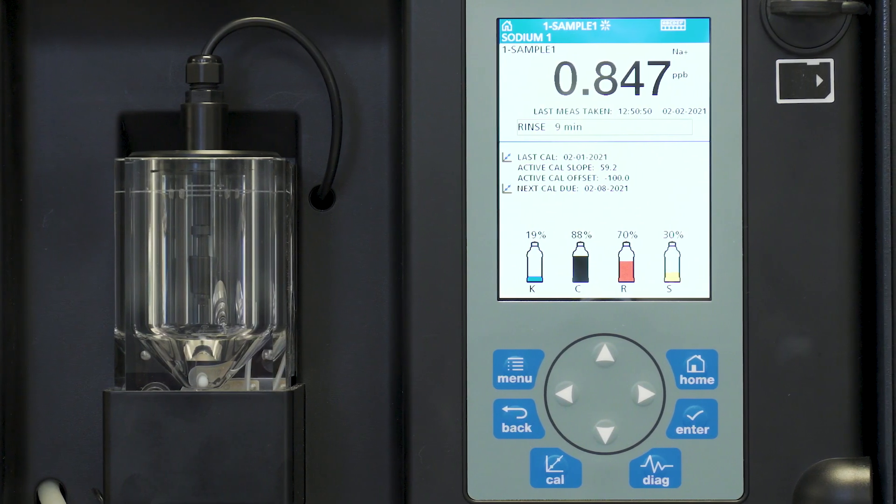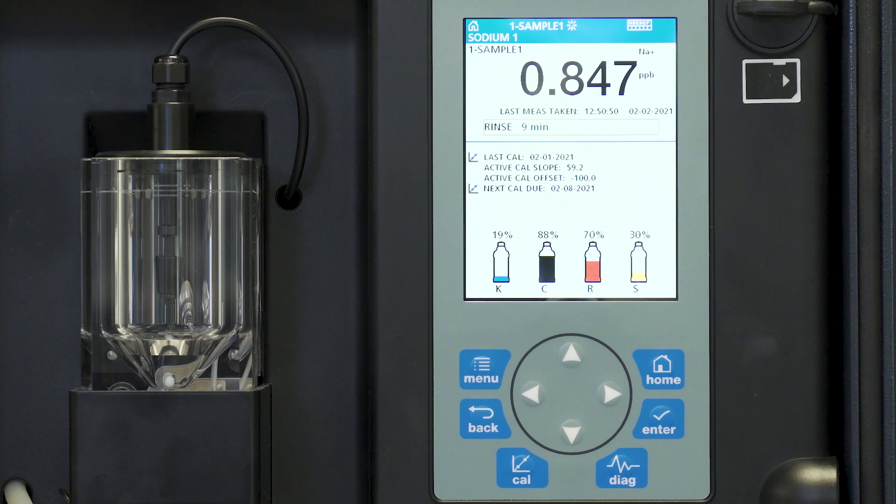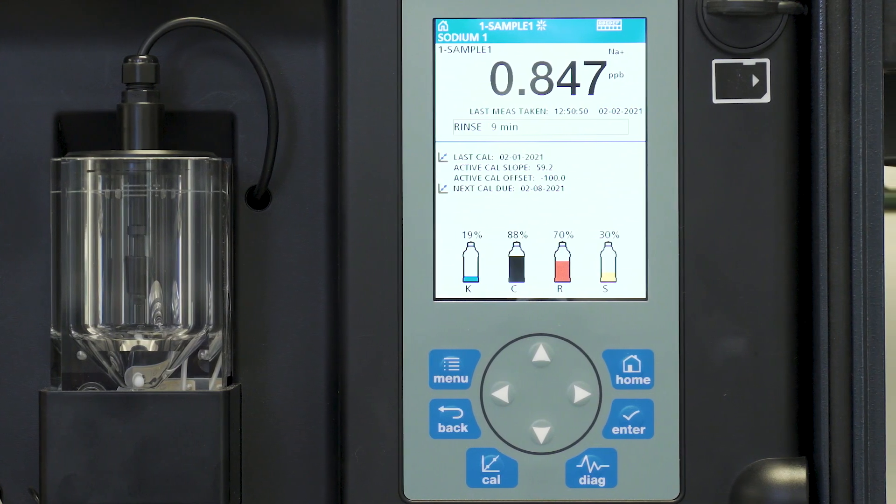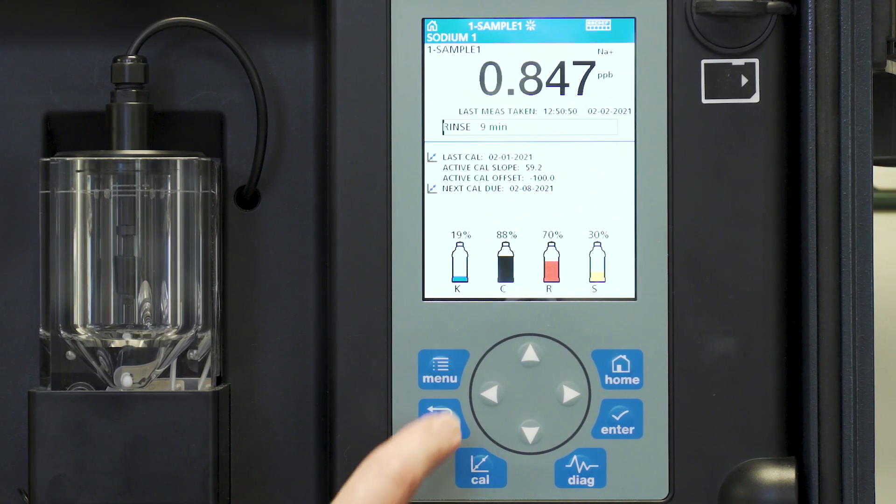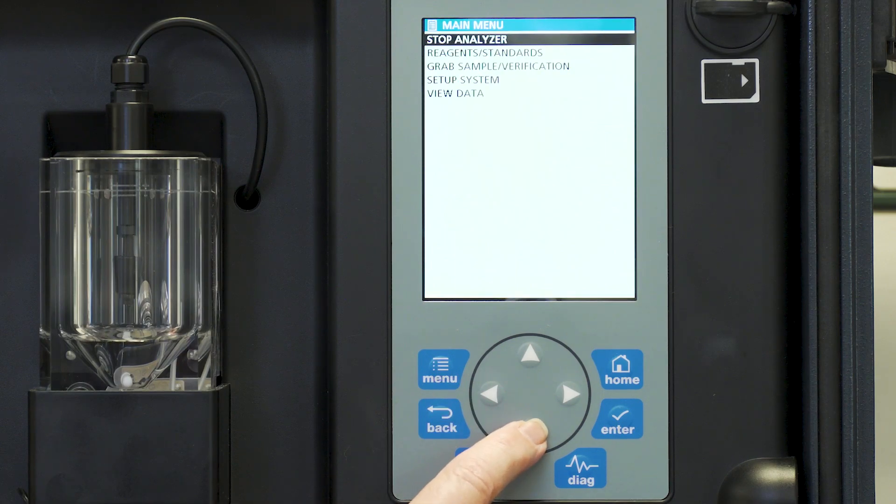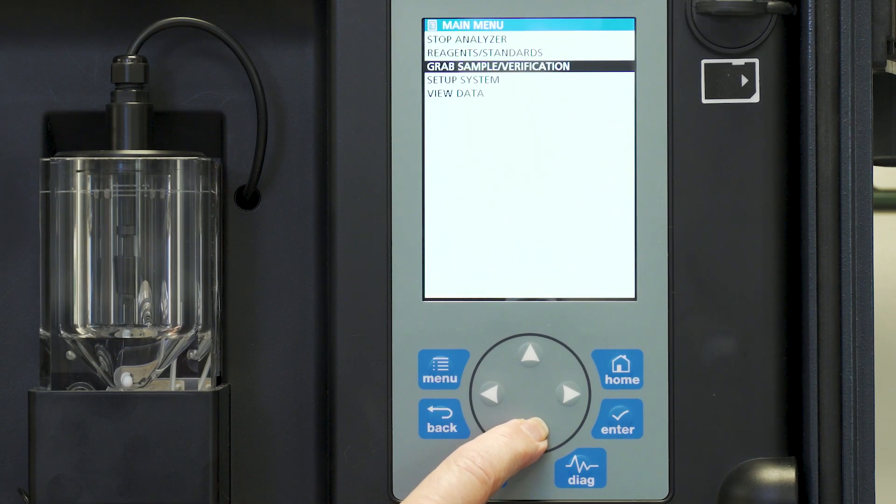The question being now is where is that measurement? This measurement has been stored in the data log. To find the results of that measurement we go to menu and we move to view data.